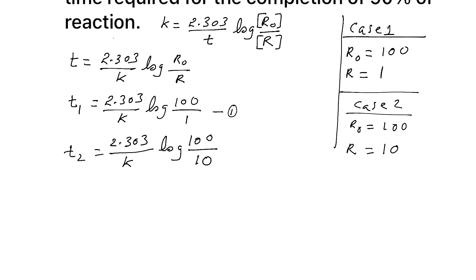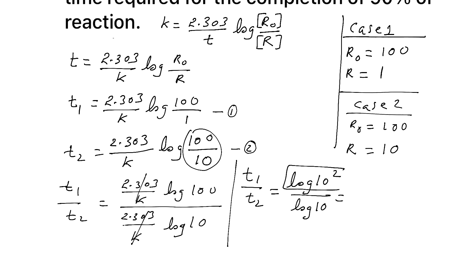Now divide case 1 with case 2. So T1 by T2 on LHS, on RHS, 2.303 by K log 100 by 1 is 2.303 by K log 100 by 10. So you can cut this. So what we will get? We will get T1 by T2 is equal to log 100 by log 10. 100 means 10 raised to 2. Now you can use log 10 raised to 2 means 2 log 10 by log 10. Log 10 cancel and what you are getting? T1 by T2 is equal to 2. T99 percentage completion by T90 percent completion is 2.